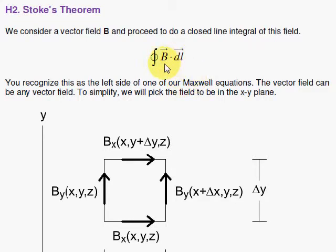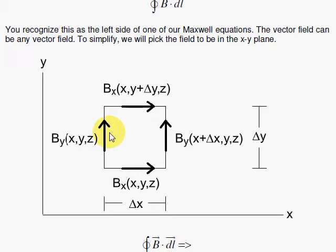We're going to calculate a vector dotted with a line element and integrate around the loop. And for the enclosed loop, we're going to take a little square. We're going to have here a delta x, a delta y,